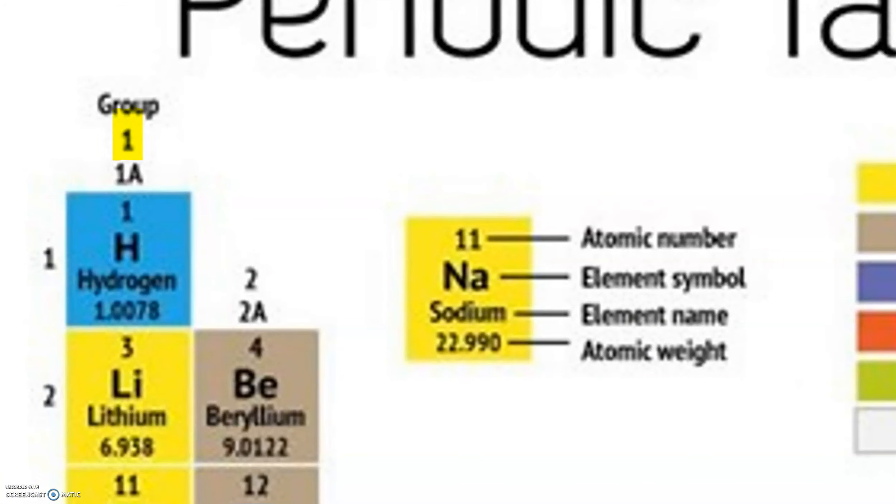If we ignore this top number and only pay attention to this bottom one, this is how many valence electrons are in every element in this group.